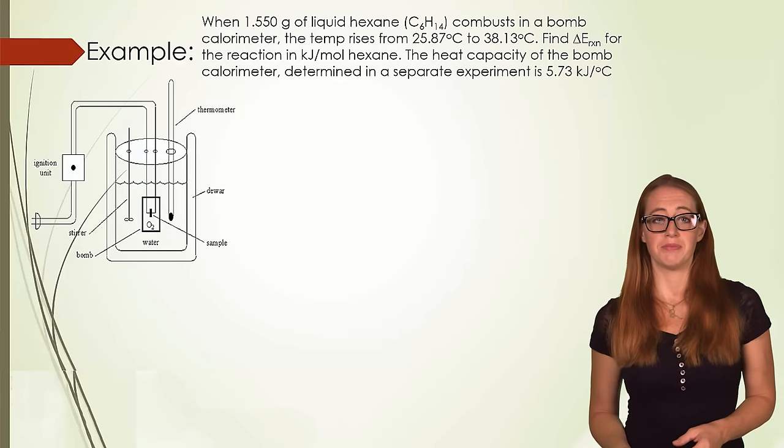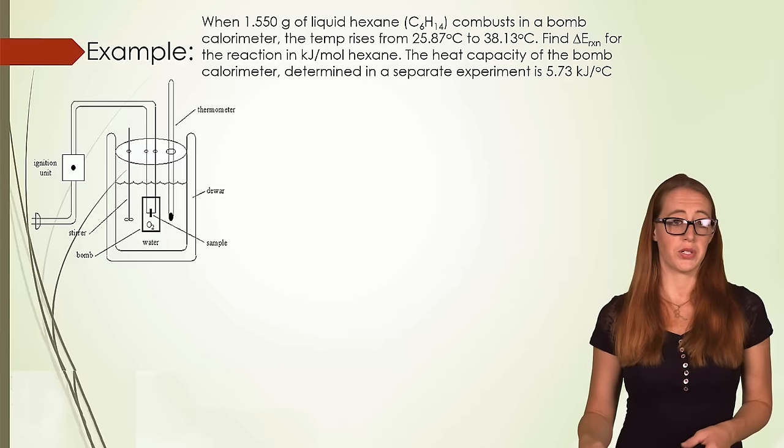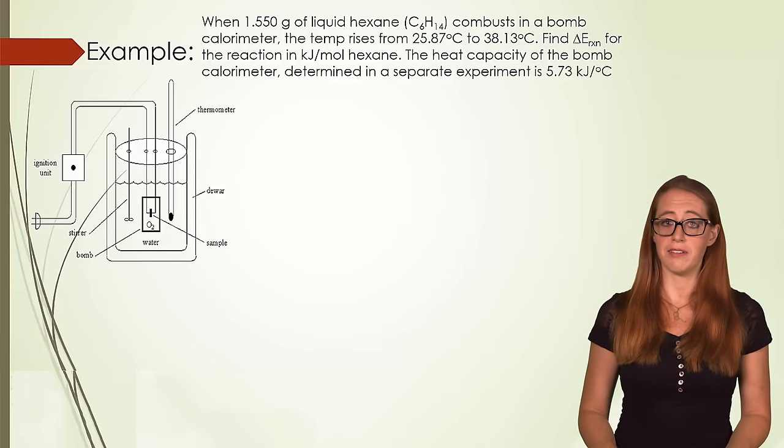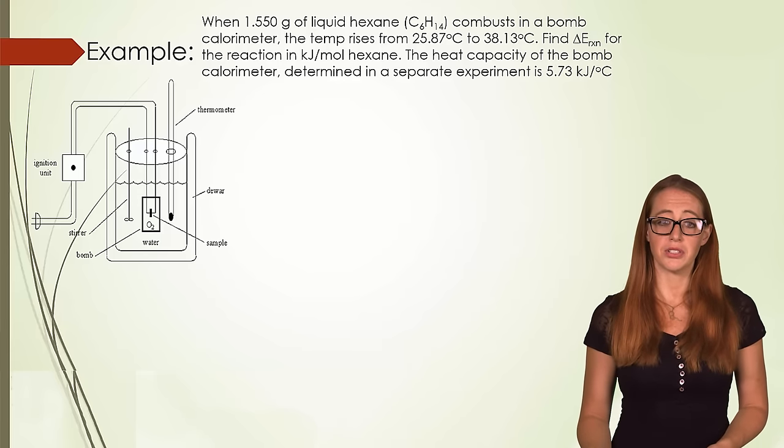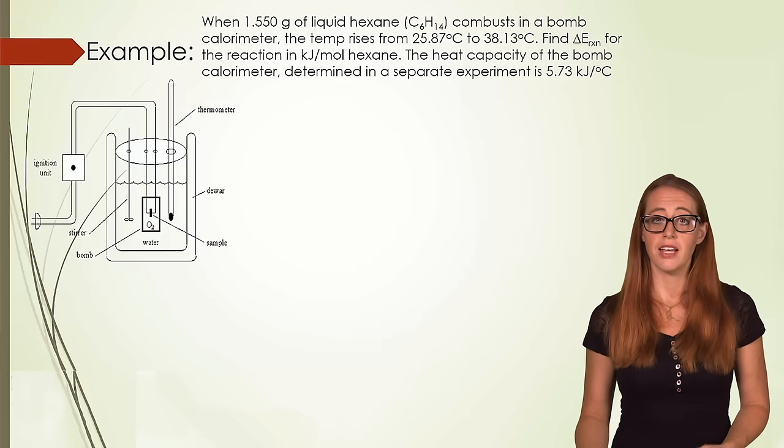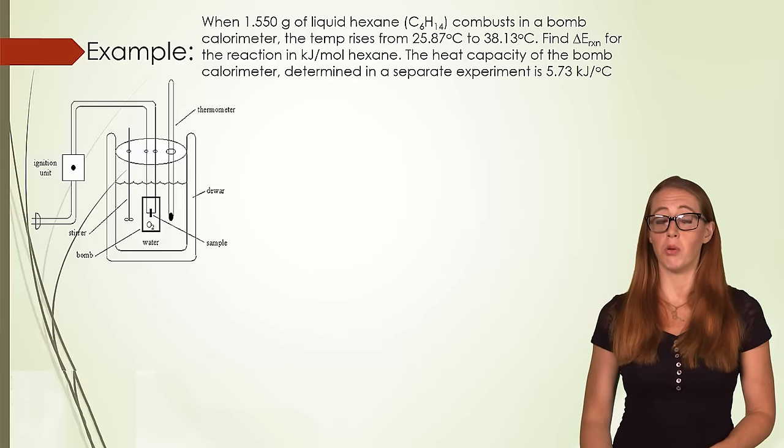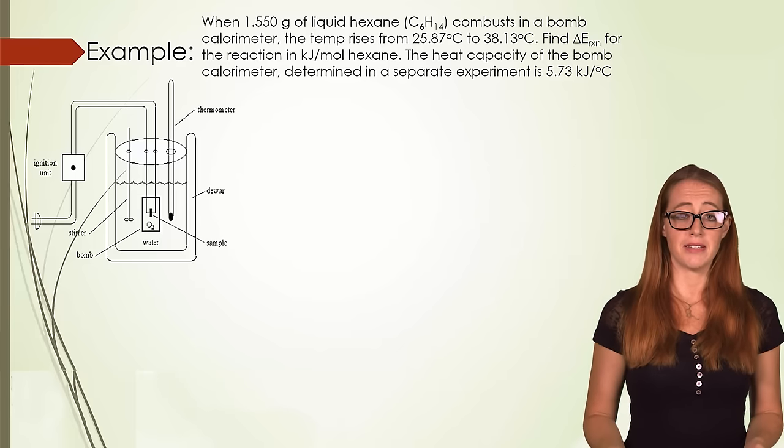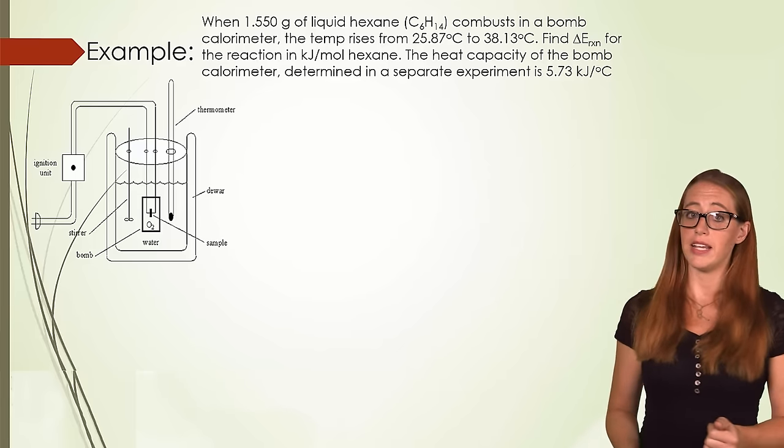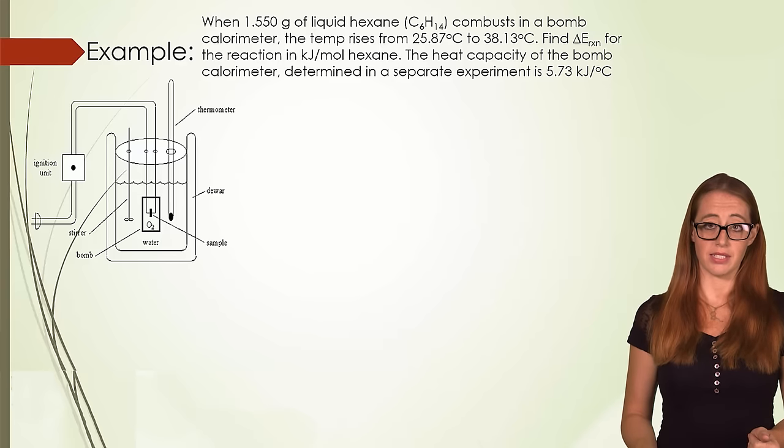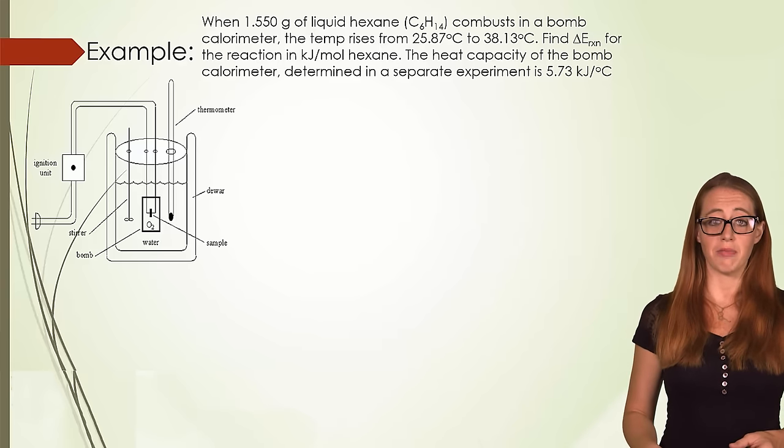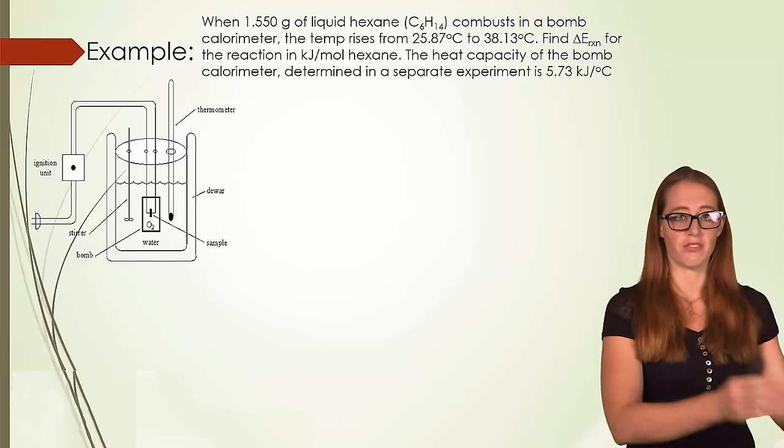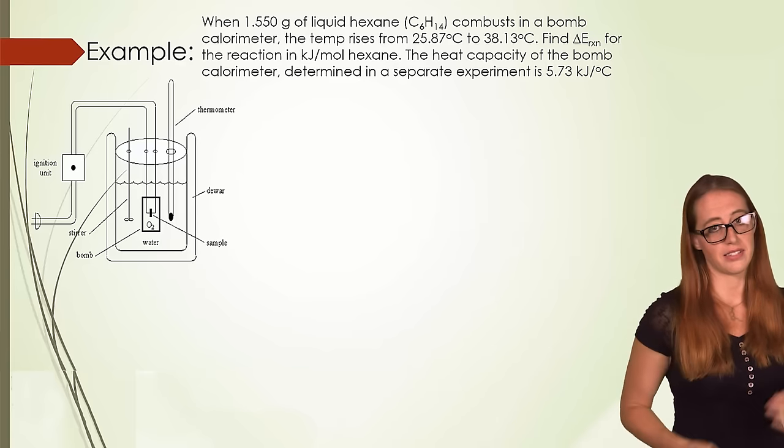So now an example. When 1.550 grams of liquid hexane combusts in a bomb calorimeter, the temperature rises from 25.87 to 38.13 degrees Celsius. Find the delta E for the reaction in kilojoules per mole of hexane. The heat capacity of the bomb calorimeter determined in a separate experiment is 5.73 kilojoules per degree Celsius. So this last part, this 5.73 kilojoules per degree Celsius is what I meant by having to do this first in a separate reaction. In this case, it was done for you.